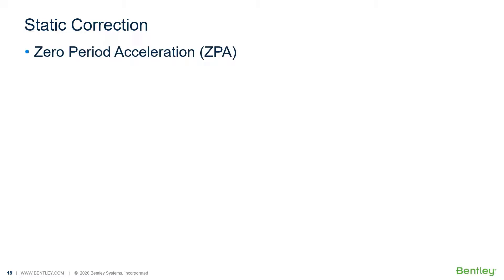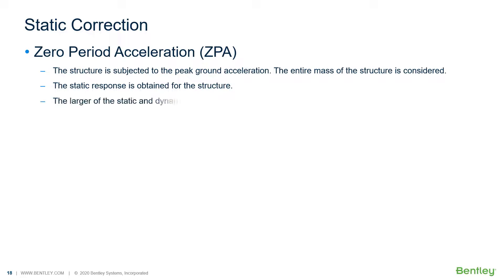The ZPA option envelopes dynamic results with equivalent static results. First, the structure is subjected to the peak ground acceleration and the entire mass of the structure is considered. The static response is obtained for the structure and the larger of the static and dynamic response is used.